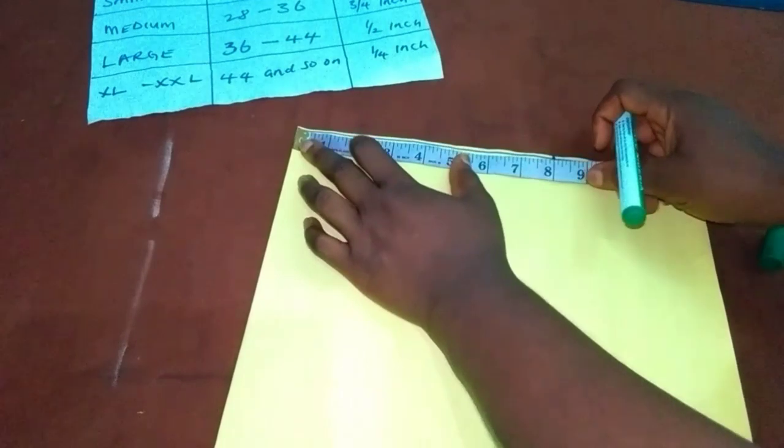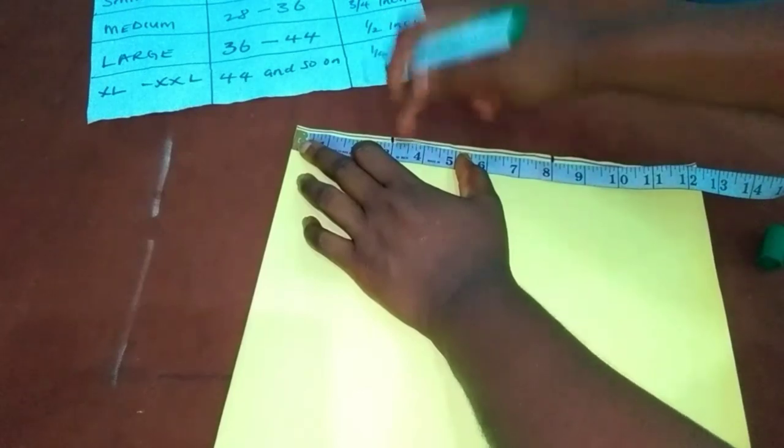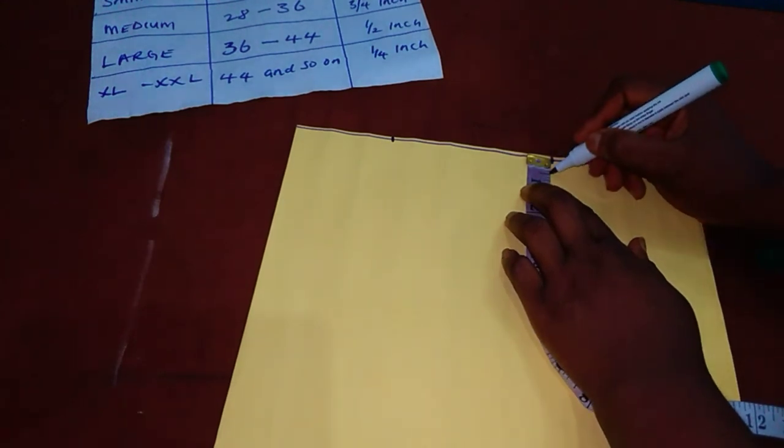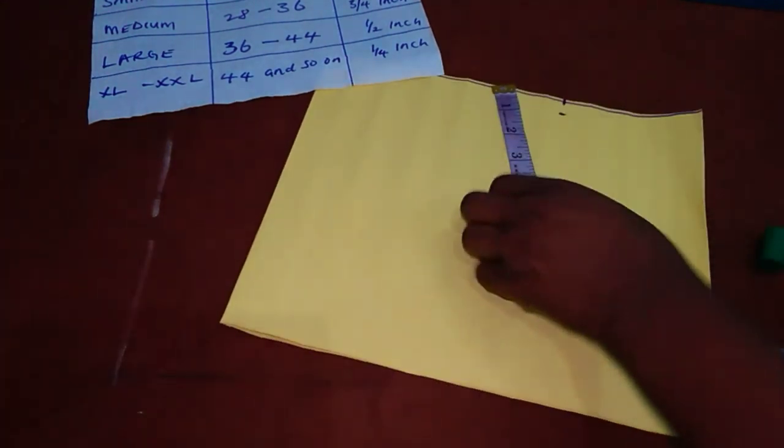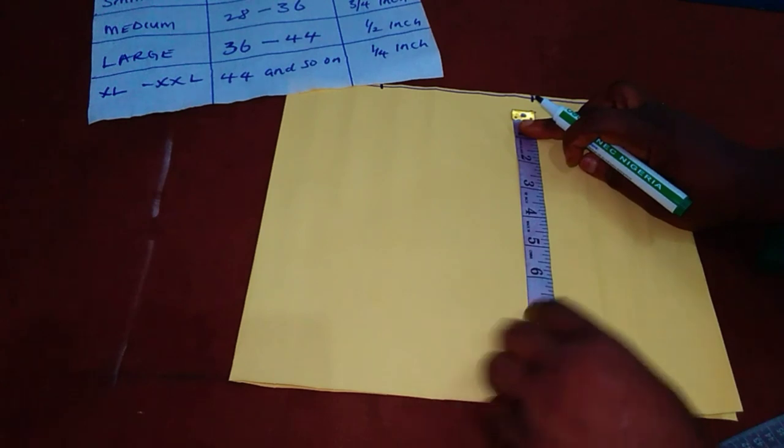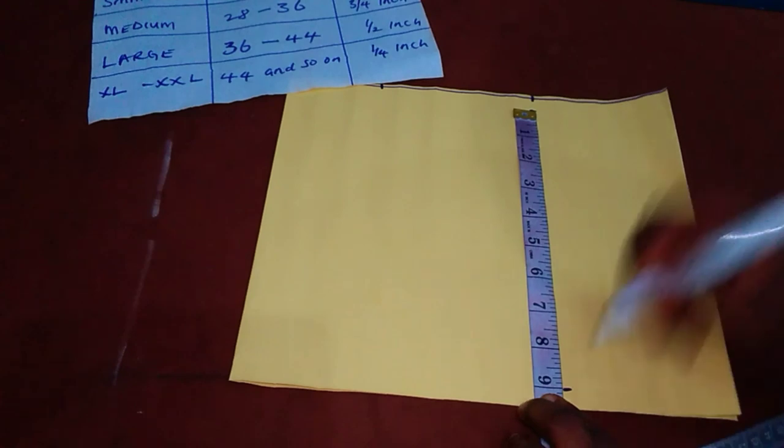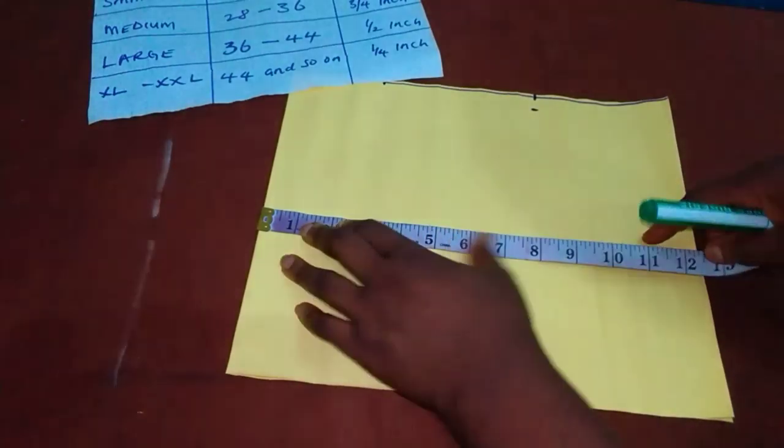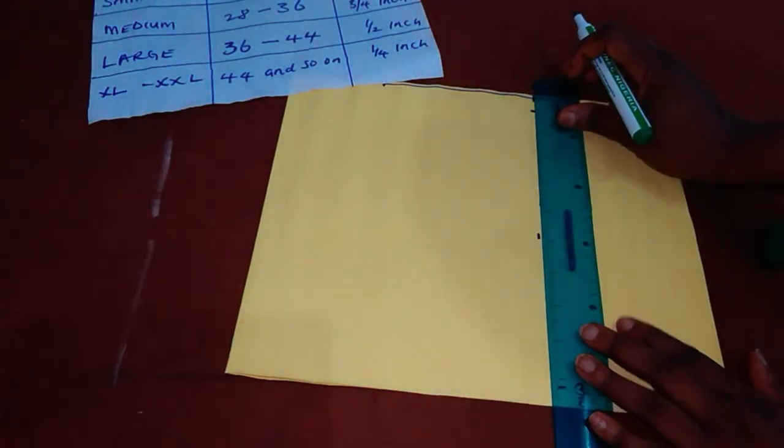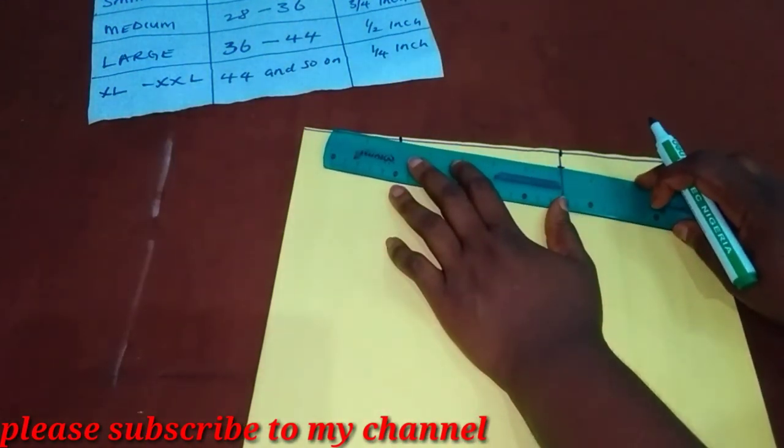The neckline, 3 inches. Sorry, the shoulder slope. The 3 inches is for the shoulder slope. The shoulder slope, I will use half an inch. Now, from the shoulder slope, I need to measure my shoulder. I need to measure the depth of my armhole, which is 9 inches. I will now put this into a straight line.